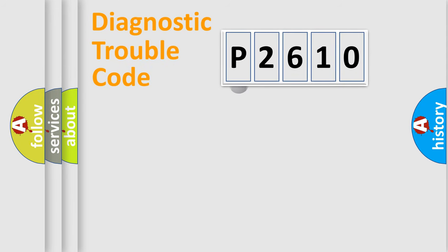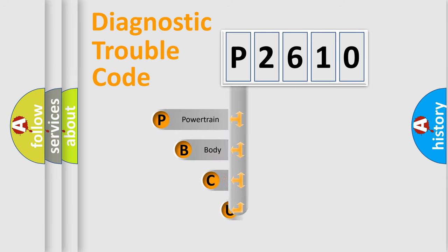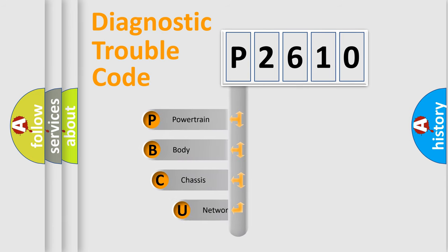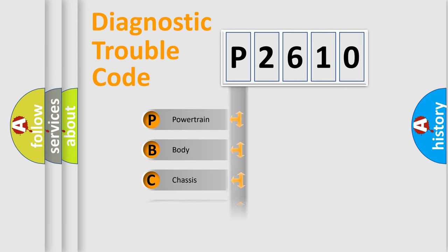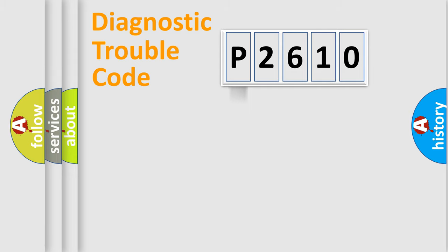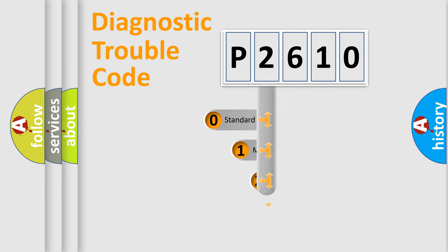First, let's look at the history of diagnostic fault code composition according to the OBD2 protocol. We divide the electric system of an automobile into four basic units: Powertrain, body, chassis, and network. This distribution is defined in the first character of the code.